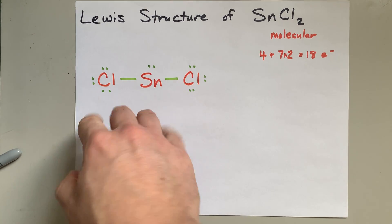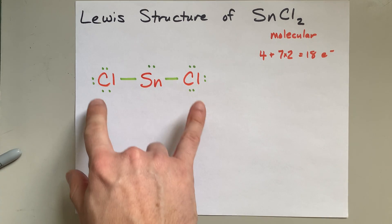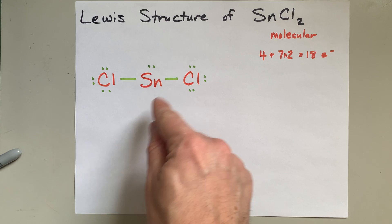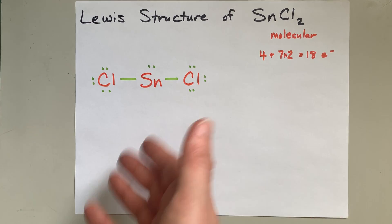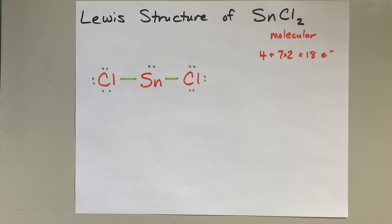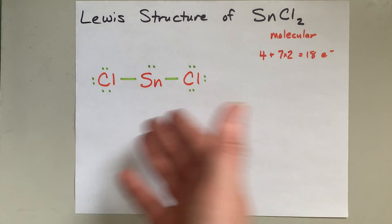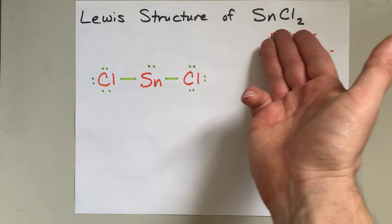This tin has a lone pair of electrons. The chlorines have a complete octet. This tin does not have a complete octet, but it doesn't need a complete octet for this structure. And this is it. This is actually the Lewis structure for SnCl2.